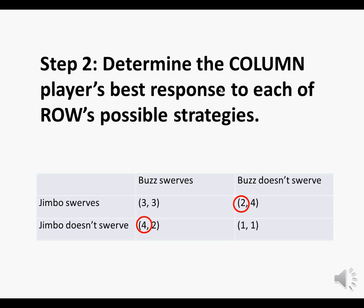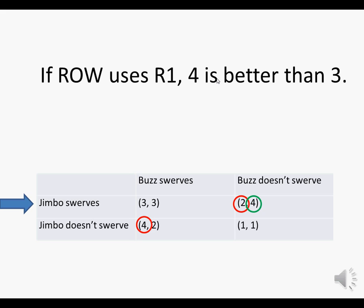Step 2 is to determine the Column player's best response to each of Row's possible strategies. One of Row's possible strategies is for Jimbo to swerve — that's Row 1. If Jimbo swerves, Column's possible payoffs are 3 or 4. The bigger payoff, 4, is better. Now, if Row uses R2, meaning Jimbo doesn't swerve, Column's possible payoffs are 2 or 1.